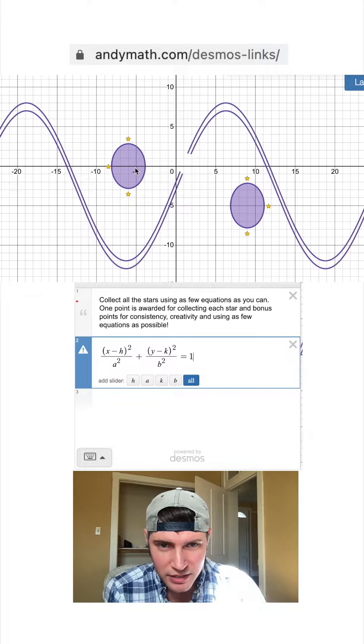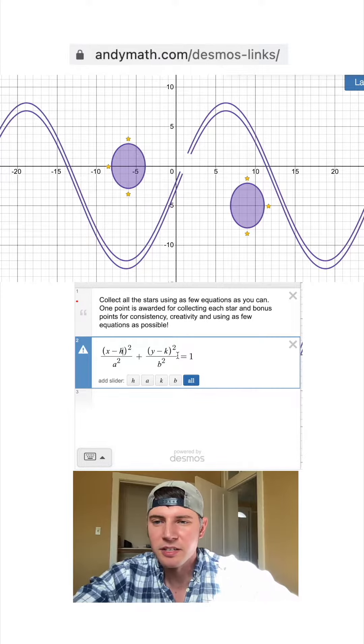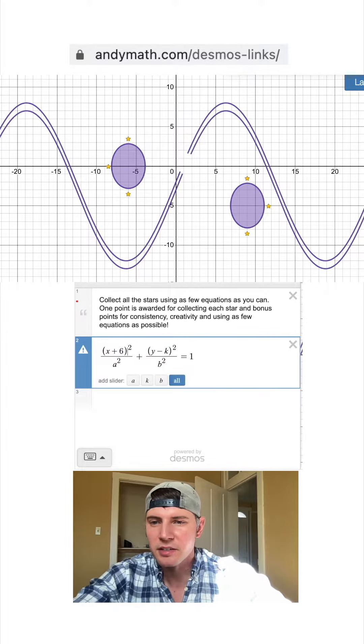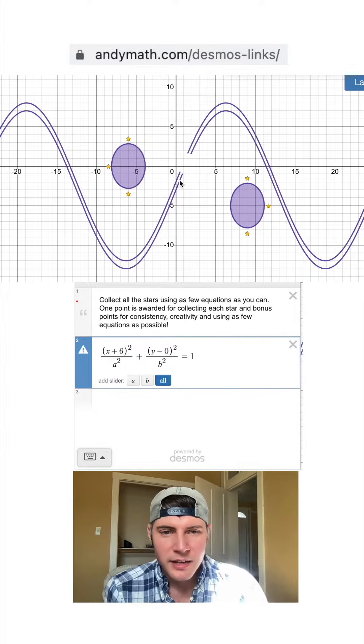The center of the ellipse here is going to be (-6, 0). So if I plug in -6 for h, I make that a +6, and I plug in 0 for k. That's now going to be centered right here.